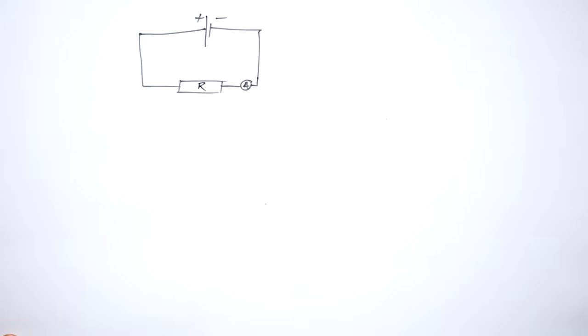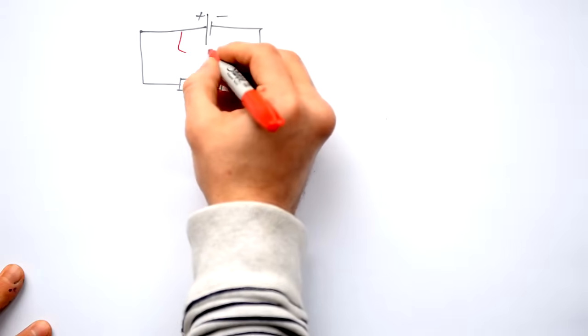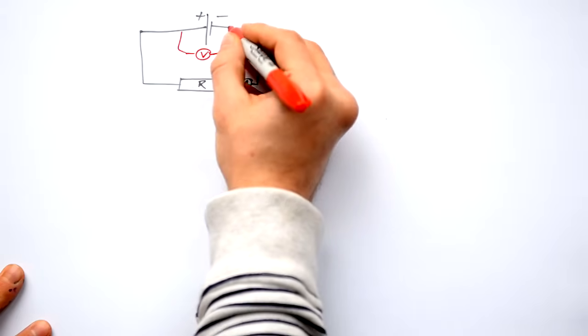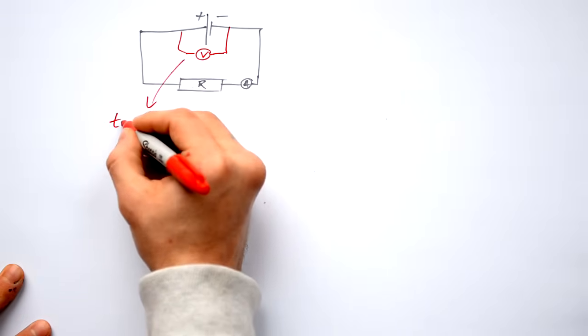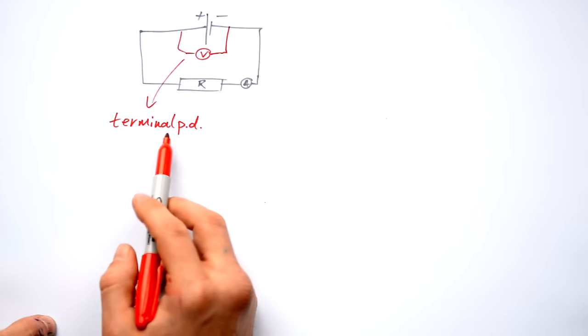So there is my circuit. Now what I'm going to do is attach a voltmeter across here, and that is going to be measuring what we call terminal PD. Now, this is where people get confused.